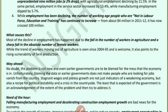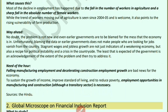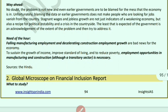The trend of workers moving out of agriculture since 2004-05 is causing problems. Working-age people not in the labour force — those in education and training — increased from 84 million to 100 million. Key causes include decline in agricultural employment, fall in female workers, stagnant wages, and jobless growth. Falling manufacturing employment and decelerating construction employment growth are bad signs. To sustain income growth, reduce poverty, and improve living standards, employment opportunities in manufacturing and construction are essential.